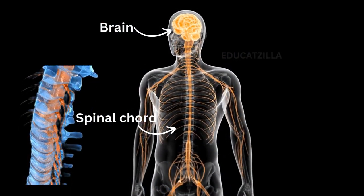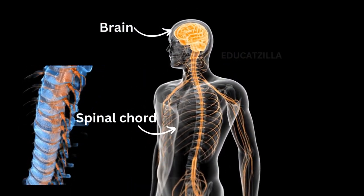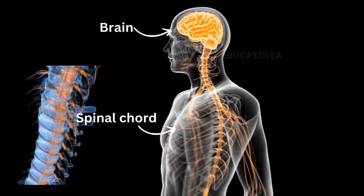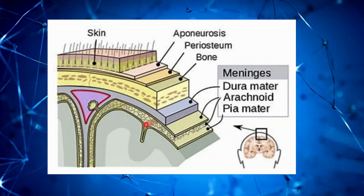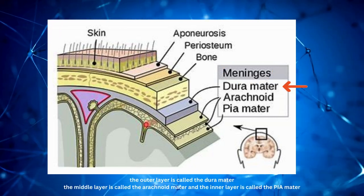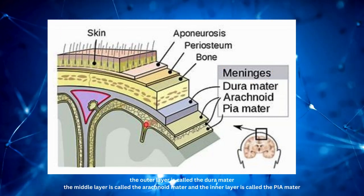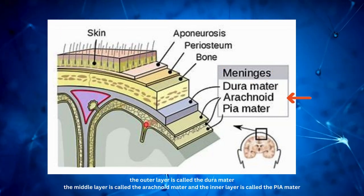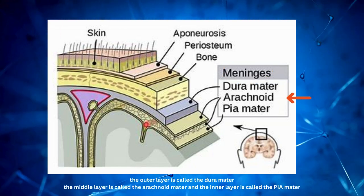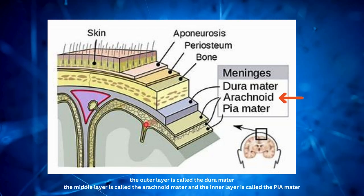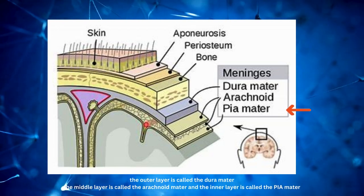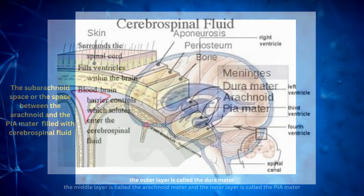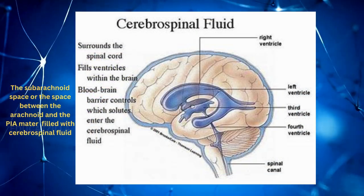The central nervous system is composed of the brain and spinal cord. Both are enclosed in protective layers called meninges. The outer layer is called the dura mater, the middle layer is called the arachnoid mater, and the inner layer is called the pia mater.